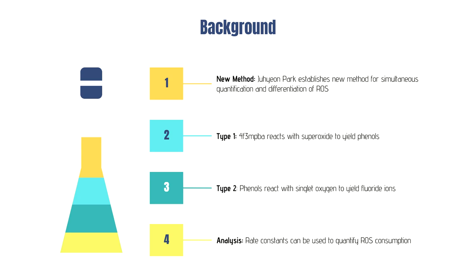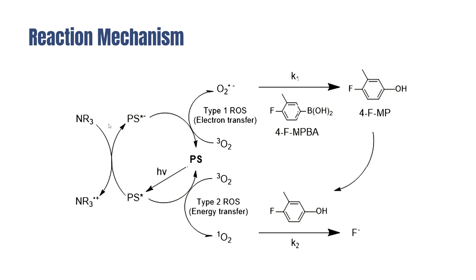A little bit of background: Zhuyun Park, the graduate student I worked under, made a new method which quantified and differentiated ROSs simultaneously. He found two different types of reaction. The top one is Type 1 and the bottom one is Type 2. The probe reacts with superoxide to generate a phenyl, and the phenyl then reacts with singlet oxygen to release fluoride ions.